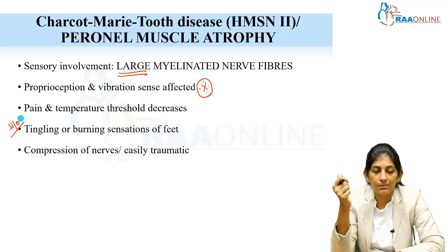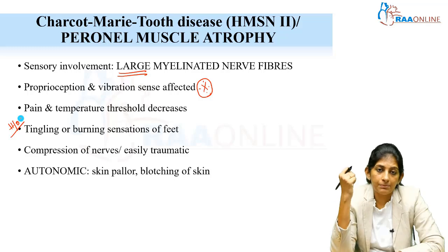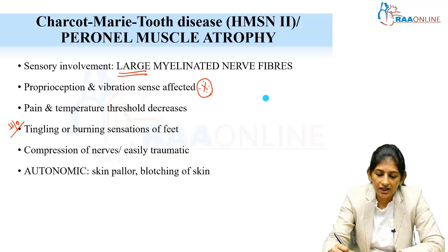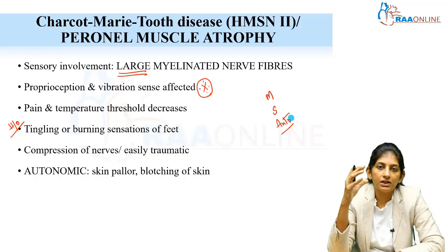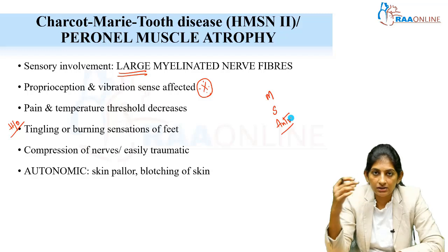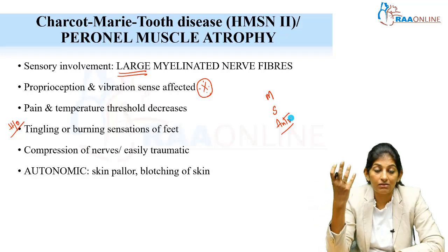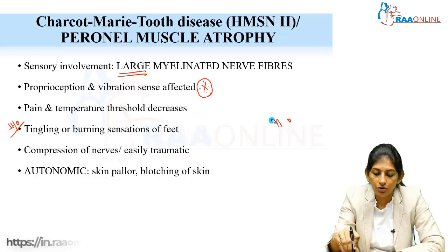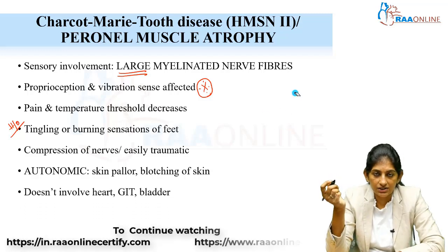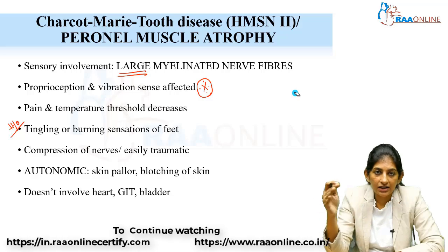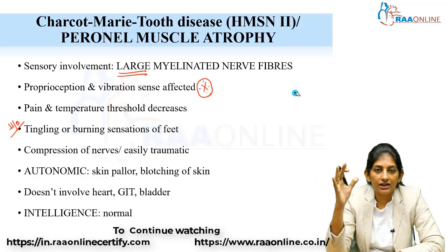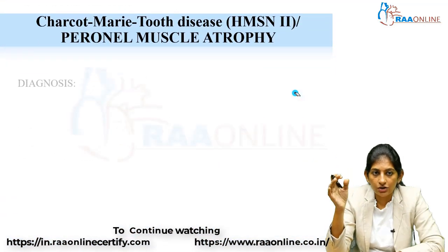Because of the weakness of the anterior compartment muscles, the peroneal nerves are easily compressed. There can be motor, sensory, and autonomic involvement. Autonomic involvement affects the lower limb circulation and skin — there will be blotching and discoloration of the skin. However, it does not involve the heart, gait, or bladder, and the patient's intelligence is normal.